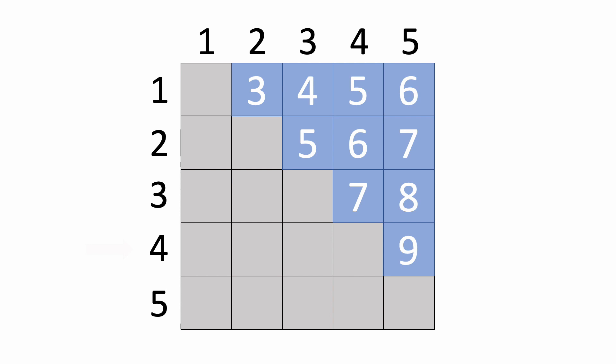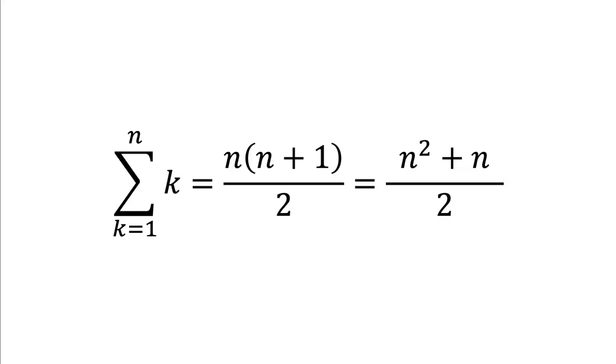Now, going back to why the first solution was O(n²), if the length of the array is n, then the first iteration took n minus 1 steps, the second iteration took n minus 2 steps, and so on, until we reach 1 for the last iteration. So how many steps is that total? We can use this formula here that tells us that the sum from 1 to n is n times (n + 1) over 2, or (n² + n) over 2.